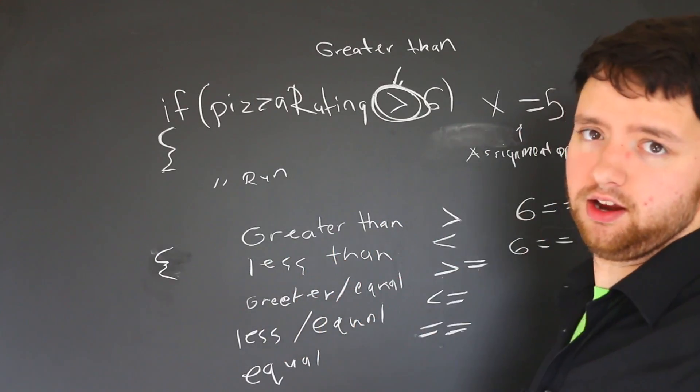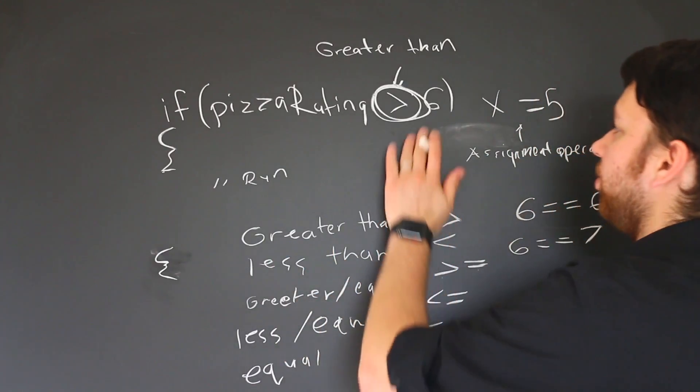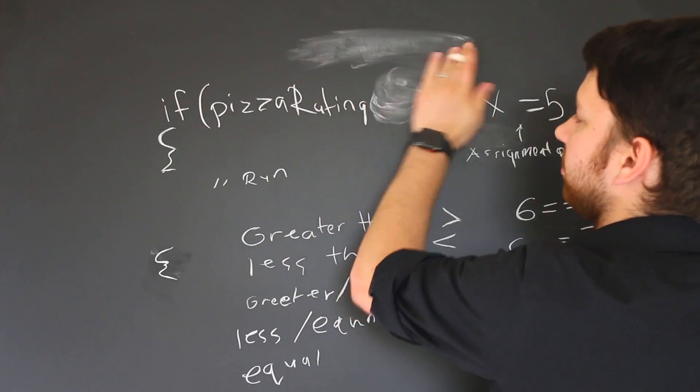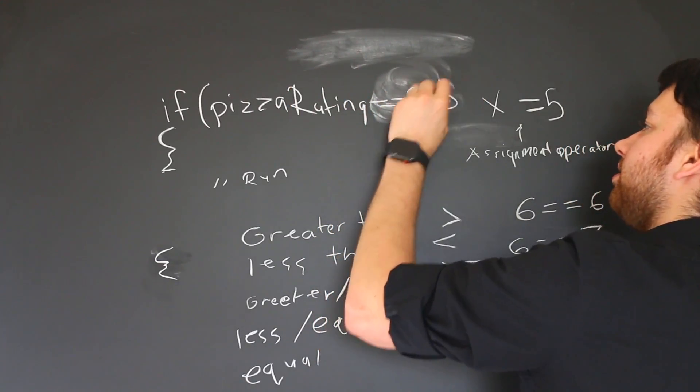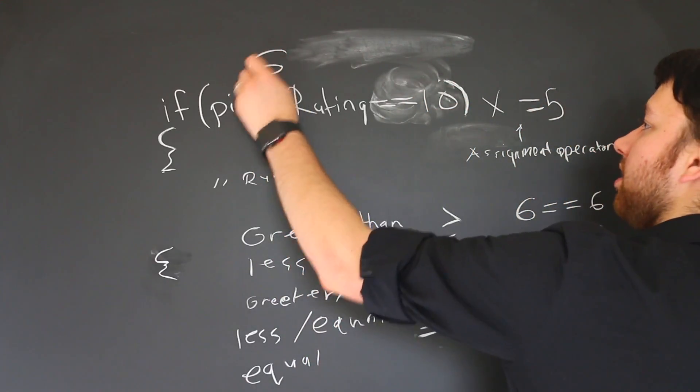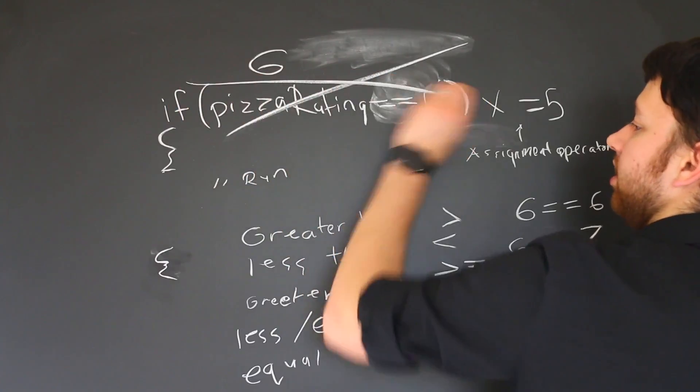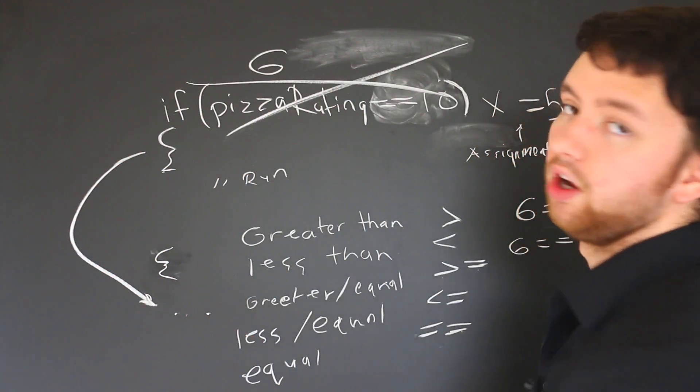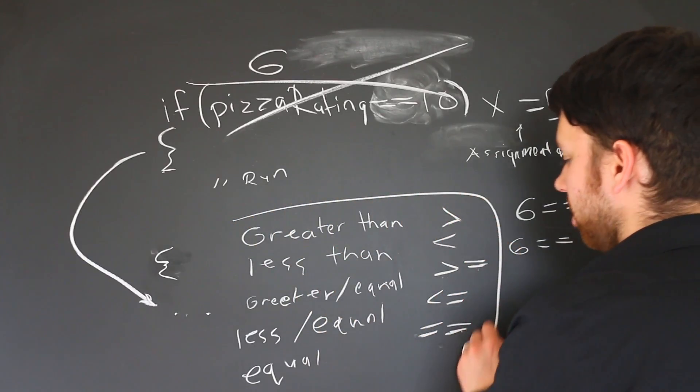So if you wanted to be very specific, only the people that get in are the people who have a pizza rating of 10, exactly 10. Well then what you would do is replace this value here, that looks terrible, with equals equals 10. And then someone puts in a value, let's say six. Well, this would be false and this code block would be skipped and we would continue from below.